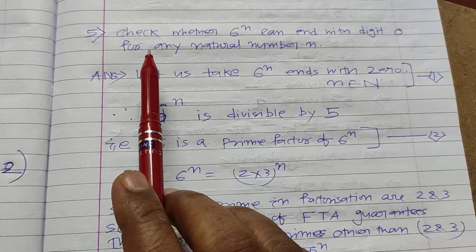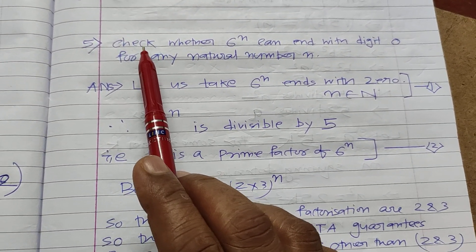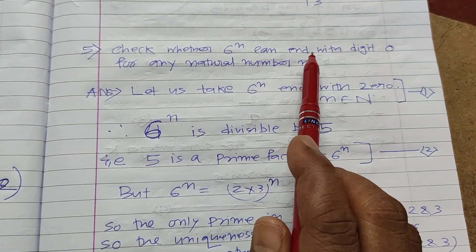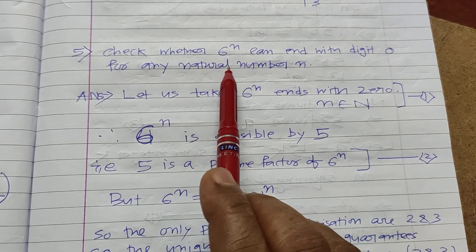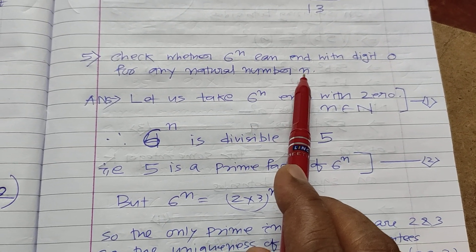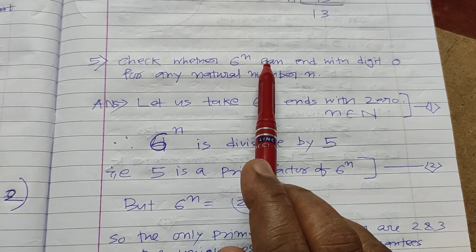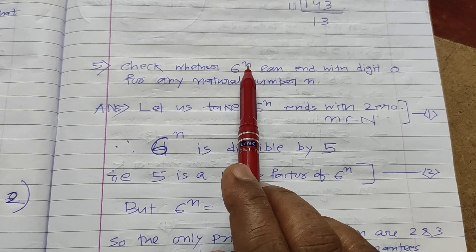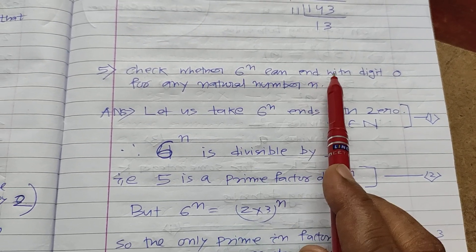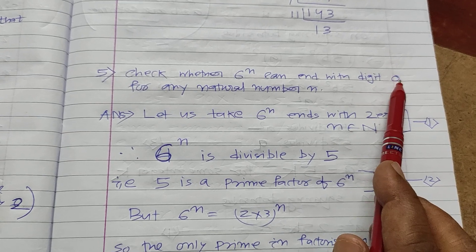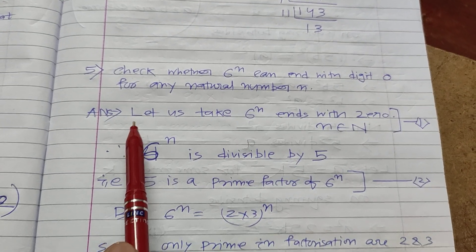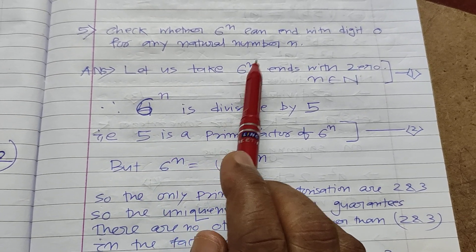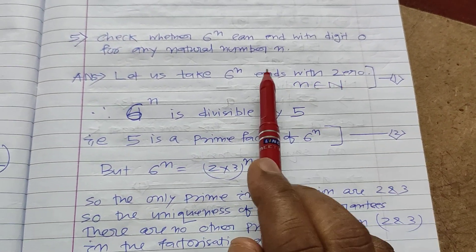Now let us move to a very important, regular problem. Check whether 6 to the power of n can end with digit 0 for any natural number n. That means if you have taken 6 to the power of n for some n — you may take n equal to 1, or 2, or 3 — whether the units digit will be 0. Let us start our proof. Let us take that 6 to the power of n ends with 0. This is our assumption.